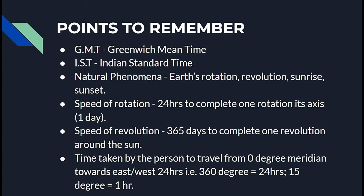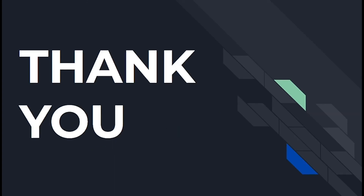Points to remember: GMT is Greenwich Mean Time; IST is Indian Standard Time. Natural phenomena include Earth's rotation and revolution, sunrise and sunset. The speed of rotation is 24 hours to complete one rotation on its axis — one day. The speed of revolution is 365 days to complete one revolution around the Sun. The time calculation: 360 degrees equals 24 hours, so 15 degrees equals one hour.